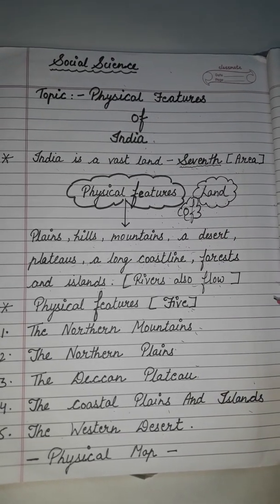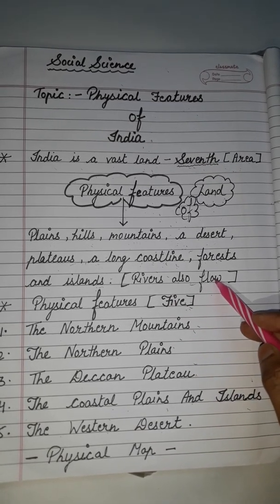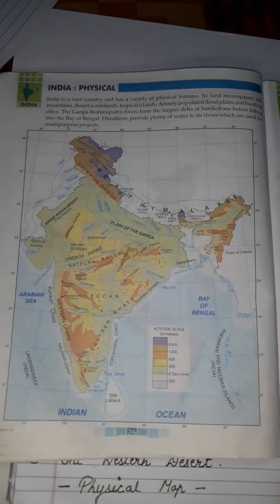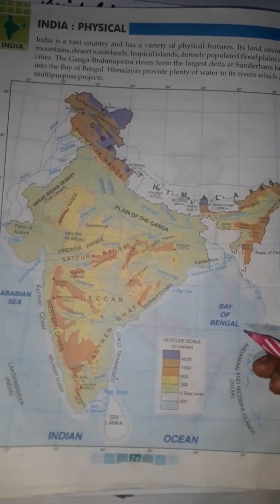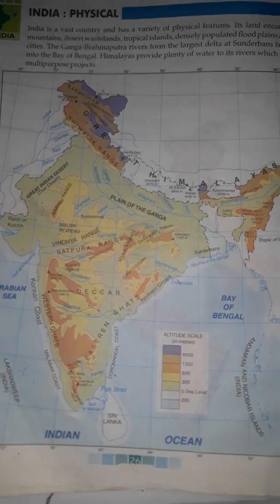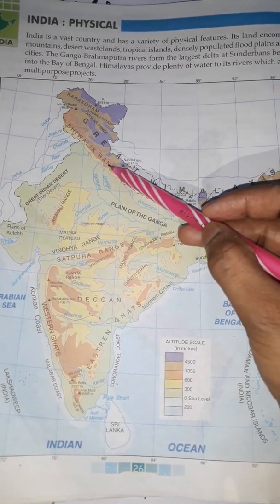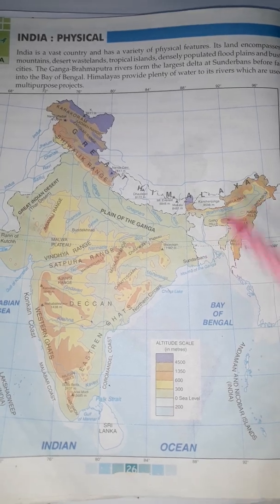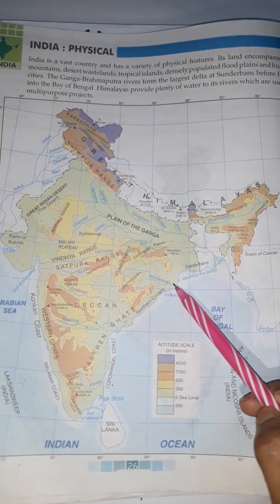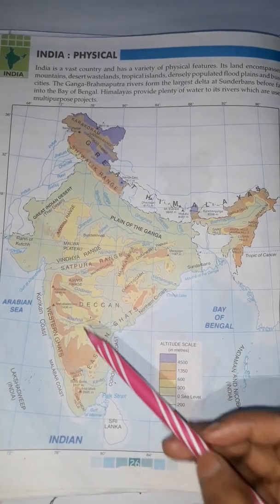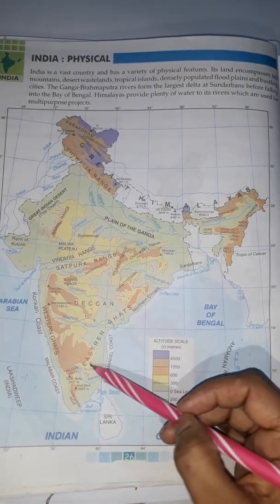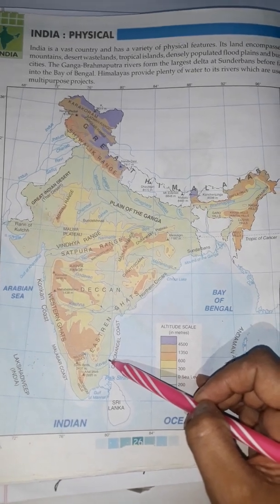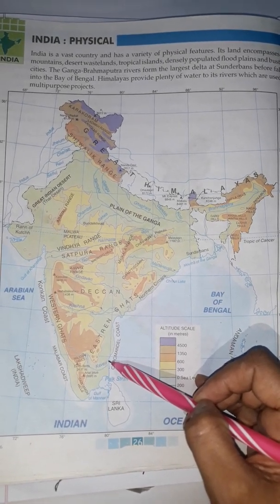A large number of rivers also flow through the land, such as the rivers Ganga, Yamuna, and Mahanadi. As you can see in the physical map of India, rivers flow through the land: river Ganga, river Yamuna, river Mahanadi, river Narmada, river Krishna, and river Kaveri, and many more rivers also flow through the land.